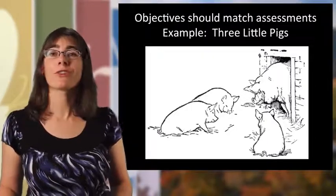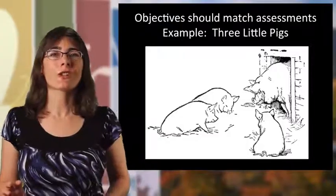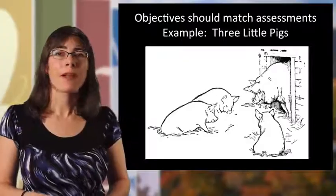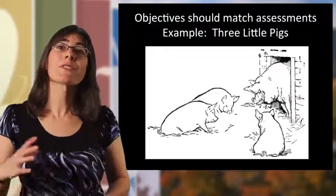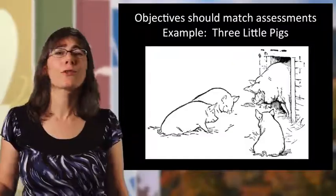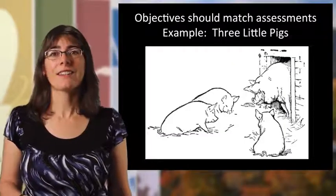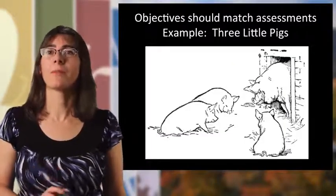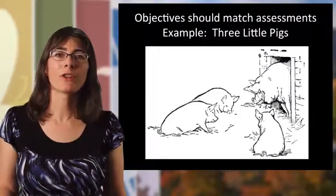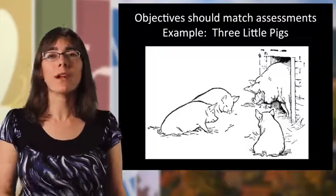To remind you of the story: three little pigs go out to seek their fortune in the world. The first builds a house of straw. A big bad wolf comes to the door and says, 'Little pig, little pig, let me come in.' The little pig says, 'No, no, no, not by the hair on my chinny chin chin.' And the big bad wolf says, 'Then I'll huff and I'll puff and I'll blow your house in,' and he blows the house over. The second pig has built a house of sticks and the wolf blows that one down too.